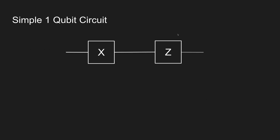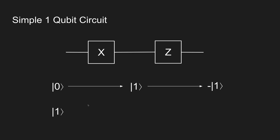Now let's look into a very simple qubit circuit. The way they're represented is usually a line — you read it left to right, the state goes in and comes out as a different state. Here it goes through the X gate and then the Z gate. If we enter a zero state, the X gate turns it into a one state, then the Z phase flip operator changes the sign. Starting with the one state: through X it becomes zero, then through the Z phase shift nothing changes since it is zero, and we end up with the zero state.